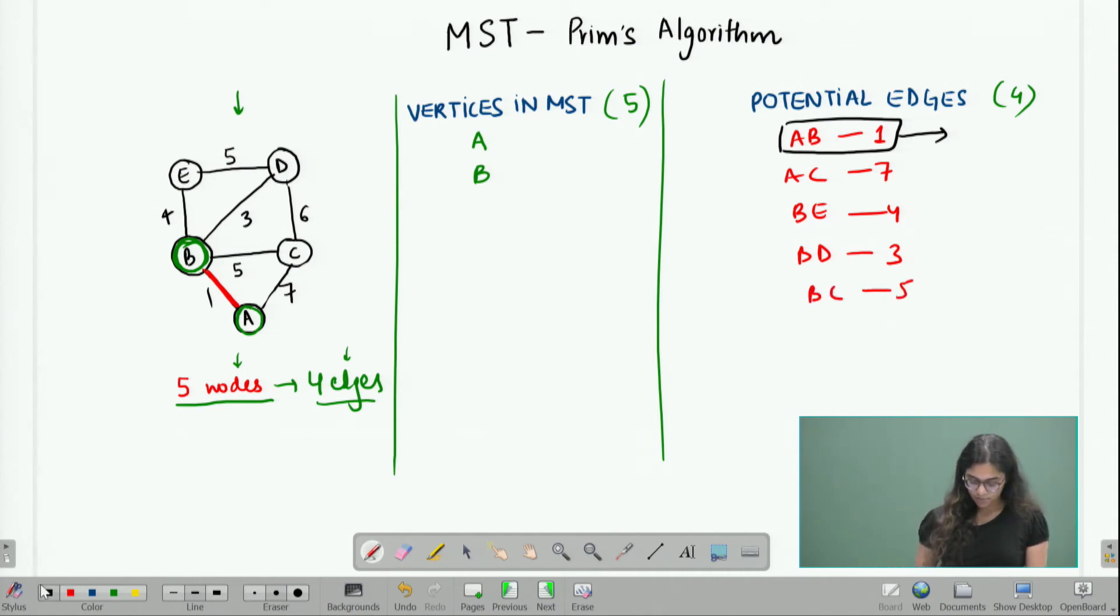Now, again I go back to my list of potential edges and I choose the one with the minimum weight which in this case will be BD with weight 3. So, I choose this edge. In this graph, I can represent this with the red line that I have chosen this edge and what happens as soon as I choose this edge is that I have included vertex D in my MST.